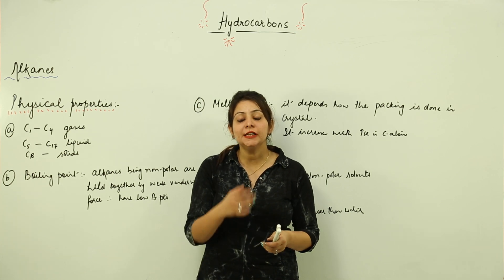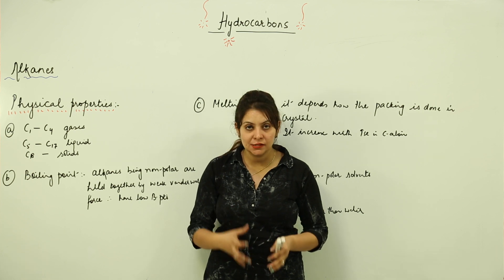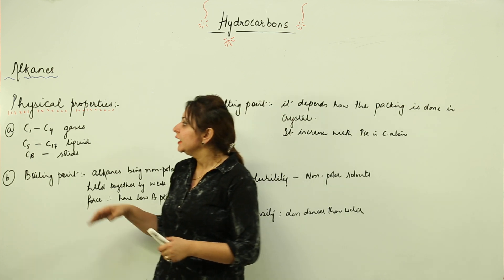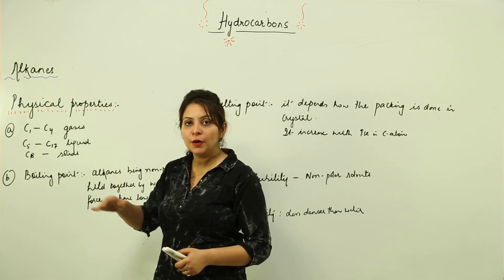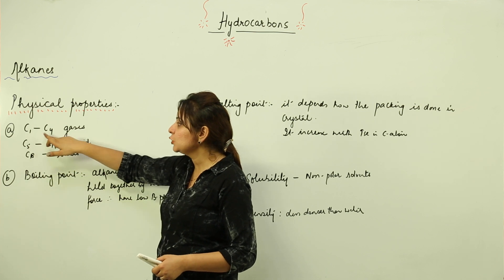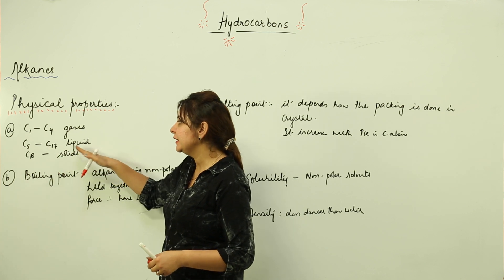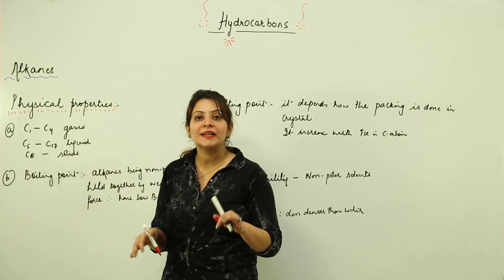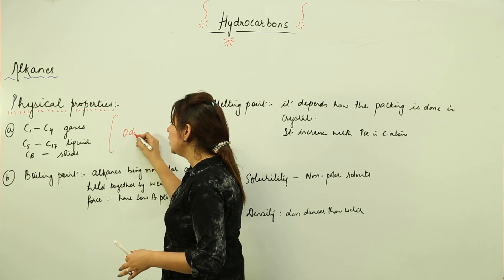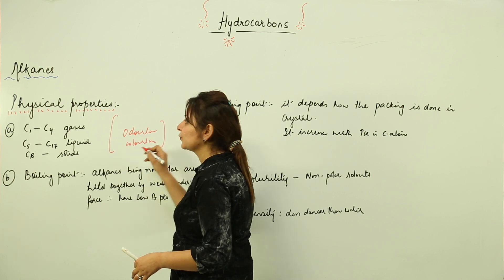When we talk of the physical properties of alkanes, we should know their state of existence at room temperature. Alkanes with carbon atoms 1 to 4 are gases, 5 to 17 are liquids, and 18 onwards are waxy solids. Whether they exist as gases, liquids, or solids, all alkanes are odorless and colorless.